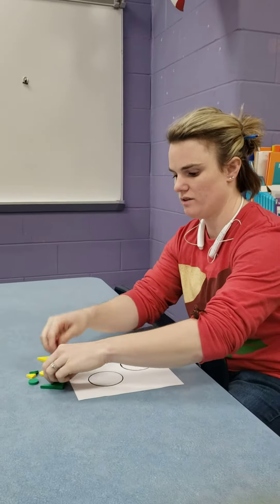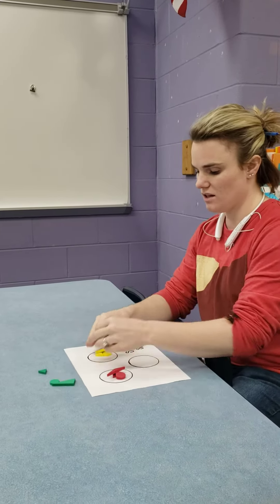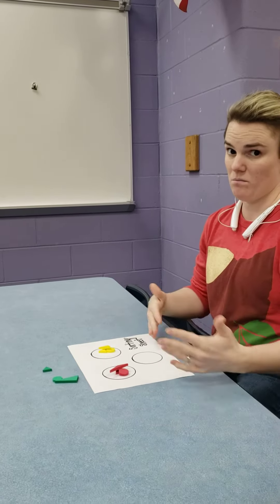They can either take all the reds and put the reds together, take all the yellows and put the yellows together, and the greens with the greens. That would mean that they sorted them by color.